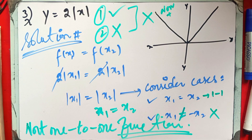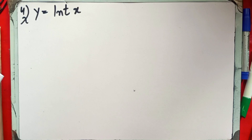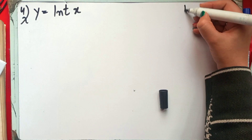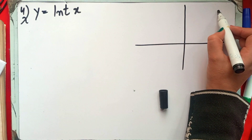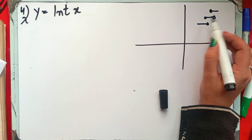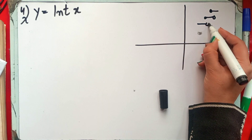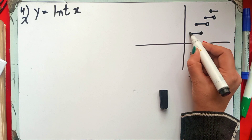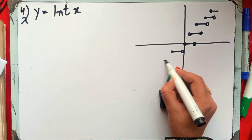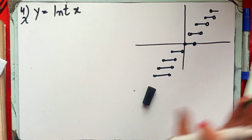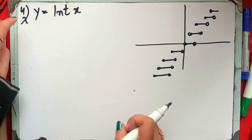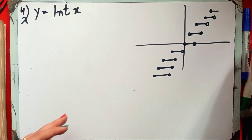This function is not a one-to-one function. Now question number 4. We are going to question number 4. The function here is the greatest integer function, y = ⌊x⌋. The graph of this function is a step graph — let's see how it looks in the book.